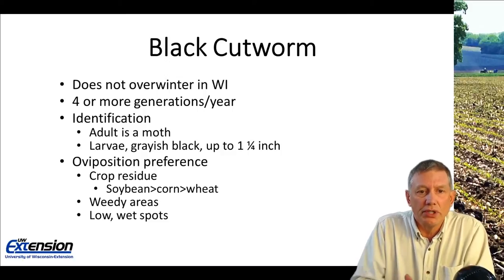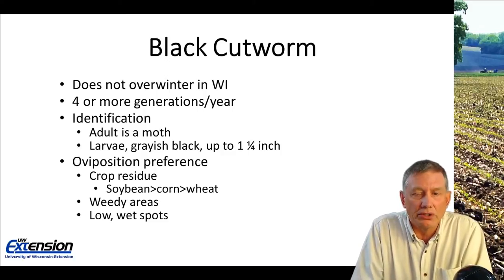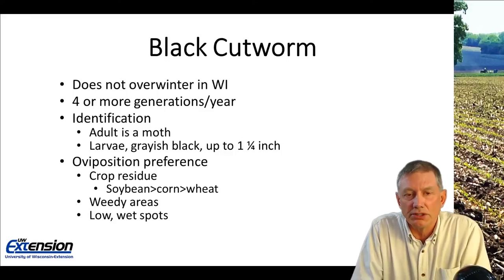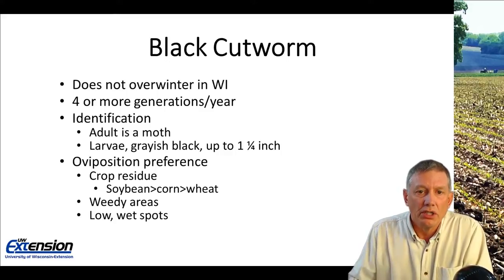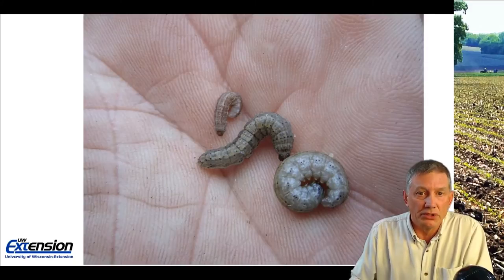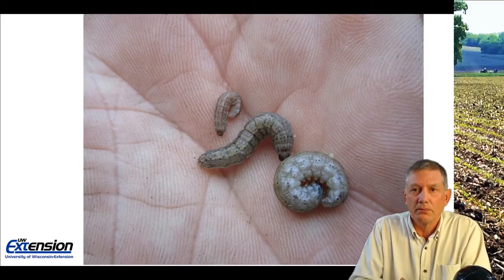The females also like weedy areas to come in and lay eggs, as well as low wet spots. So those three situations — crop residue, weedy areas, and low wet spots — are areas that I would go to when spot checking for black cutworm damage in seedling corn.